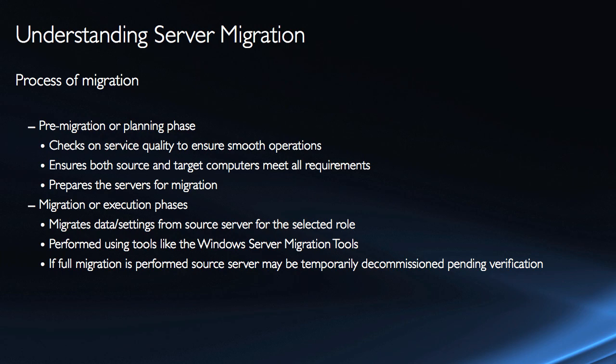The migration or execution phase is actually migrating data and settings from the source server for that selected role. We'll be using tools like the Windows Server migration tools, a very handy set of tools that Microsoft has provided to walk us through the whole migration process and make sure that the overall deployment is successful. If a full migration is performed, the source server may be temporarily decommissioned — pending verification — so that we have a rollback plan. We'll verify that all files have been replicated and all printers are accessible before taking that server offline.